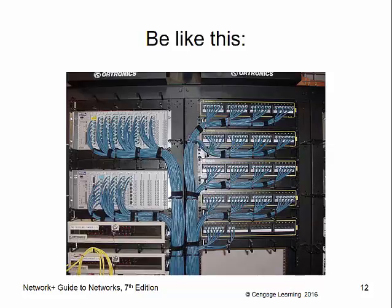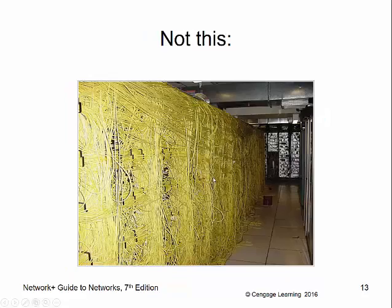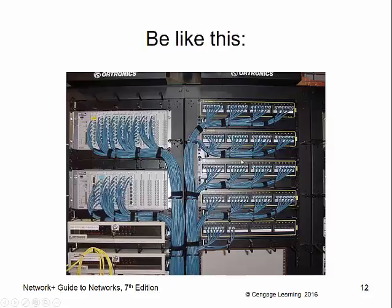You want your cabled environments to look like a well-organized example: color-coded, consistent, properly sized with a little slack, using tie-down straps and cable management trays. Don't end up with a tangled mess — and that's a real example, more common than you'd think. These details like documentation and cable management are the first things that go when people get busy. When things get hectic, you run a new cable, fix the problem, move to the next emergency, and forget the first one. Over time, you end up with a nightmare to manage.